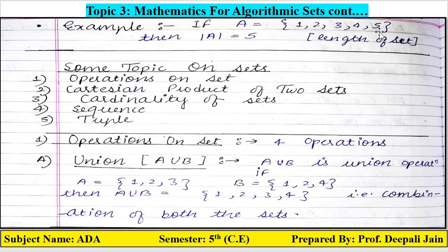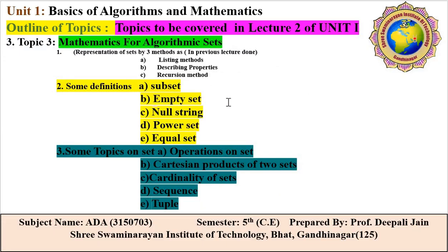For example, if A = {1, 2, 3, 4, 5}, then the value of |A| is 5 — this is the length of the set. If a question asks to find the value of |A|, the number of elements equals the length of the set. So the definitions of subset, empty set, null string, power set, and equal set — all these definitions of topic three part two are now complete.